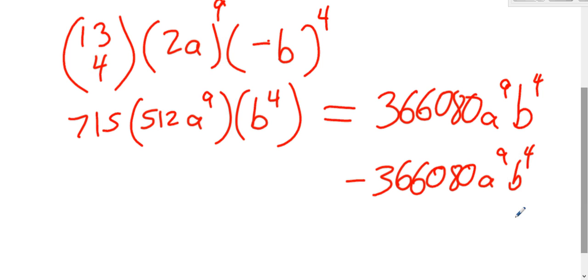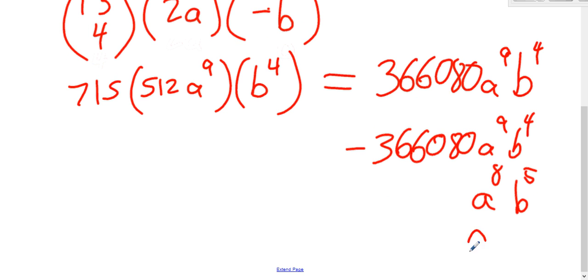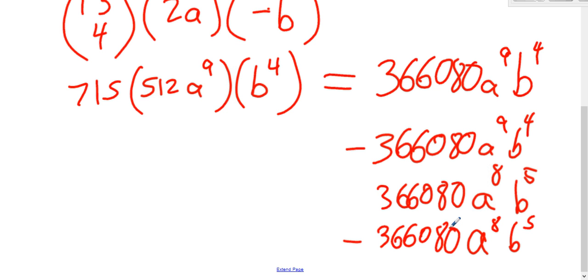Or you might mix up your exponents and forget to subtract the 1 from that, and you would have b to the 5th and a to the 8th. So my guess is that if this was a multiple choice test, these would be your four options, A, B, C, and D. They all have the same number, so it doesn't matter what they multiply to, because it's obviously going to be 366,080.